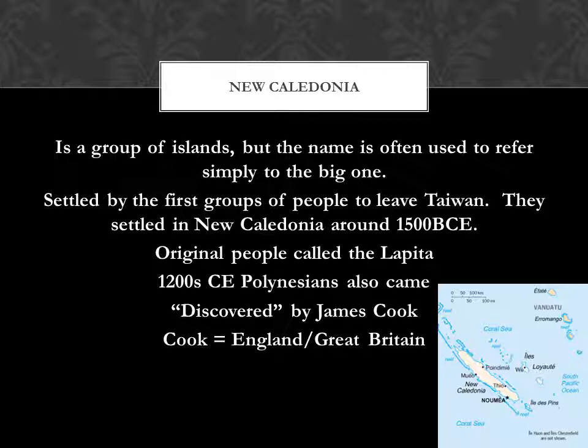One of the three islands we're going to talk about is New Caledonia. It's a group of islands, but as you can see by the map, there's one really big one — that's what most people are referring to when they say New Caledonia. The first people to live there are actually that group of people that left Taiwan, eventually settled in the Philippines, and spread out to canvas over Oceania. They'll settle in New Caledonia around 1500 BCE. The original people were called the Lapita.